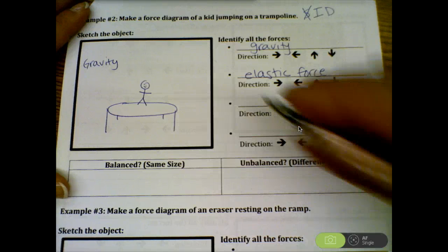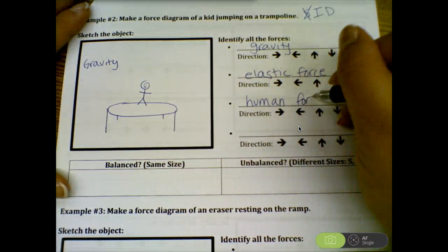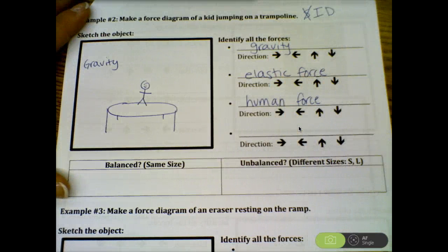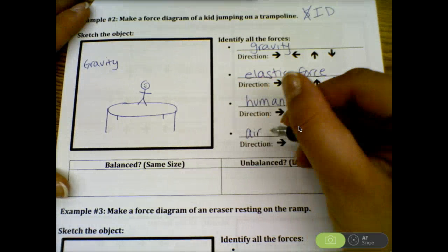Many of you included the fact that there is human force because often when you are on the trampoline, you kind of use your legs to push back up. So I would agree with human force. And technically, you're moving through the air. So in that case, we can also add air resistance.